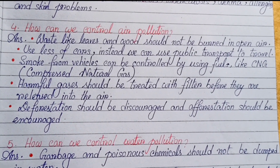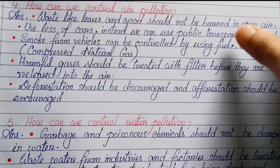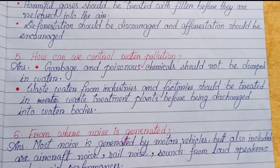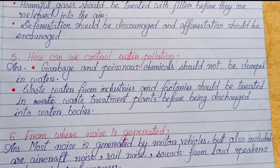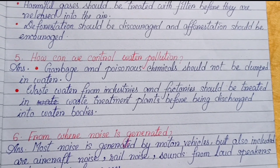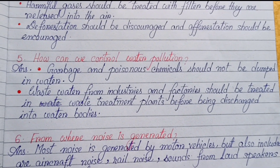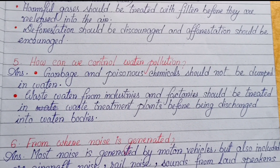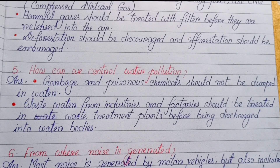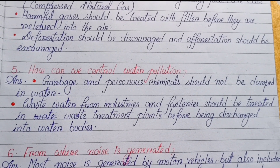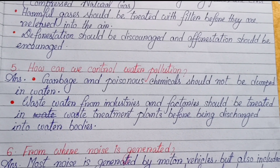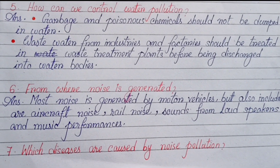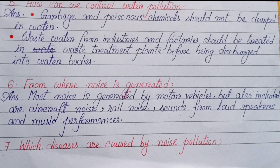Question number five: How can we control water pollution? Garbage and poisonous chemicals should not be dumped in water. Wastewater from industries and factories should be treated in waste treatment plants before being discharged into water bodies.